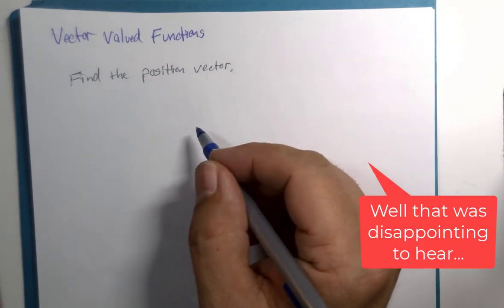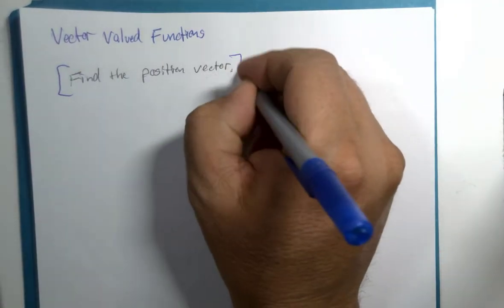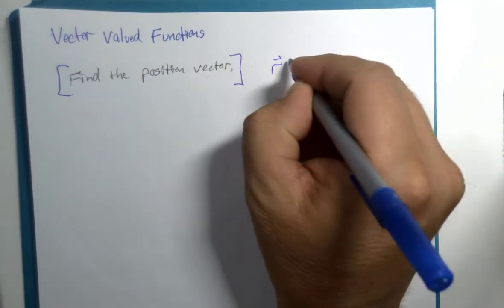But to start with, here's a base question. We are going to find the position vector, otherwise known as r of t.